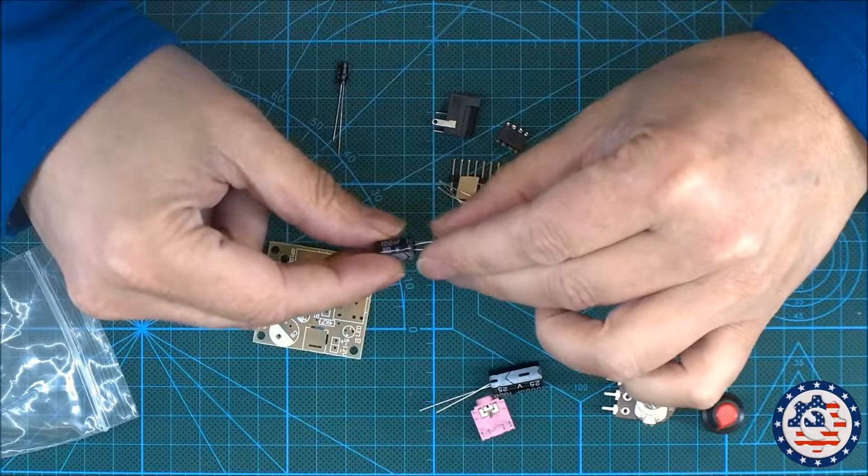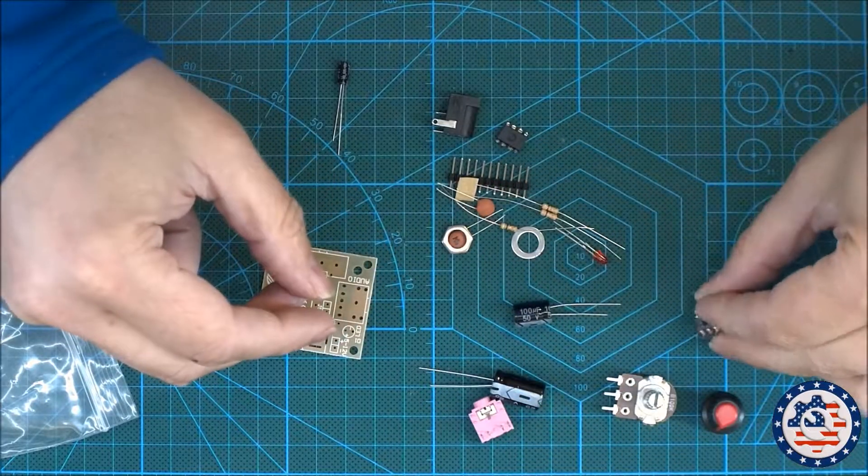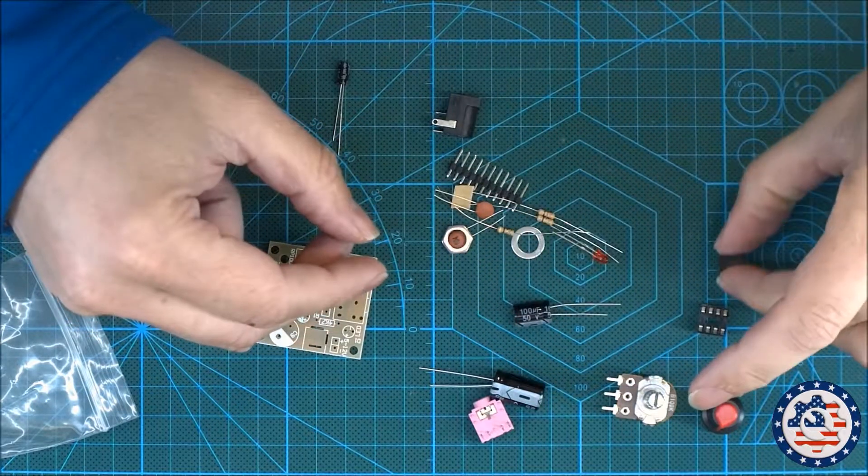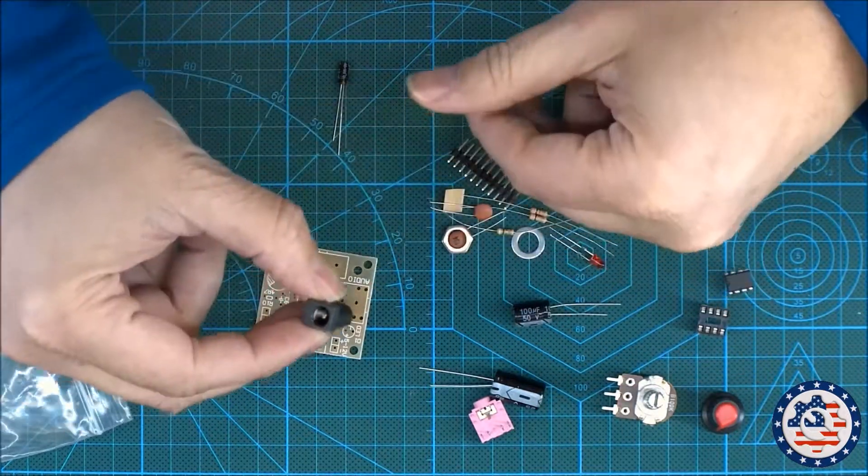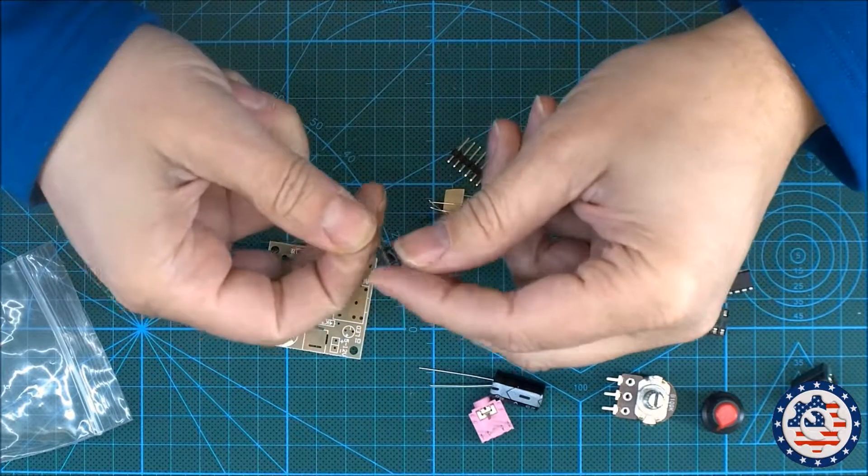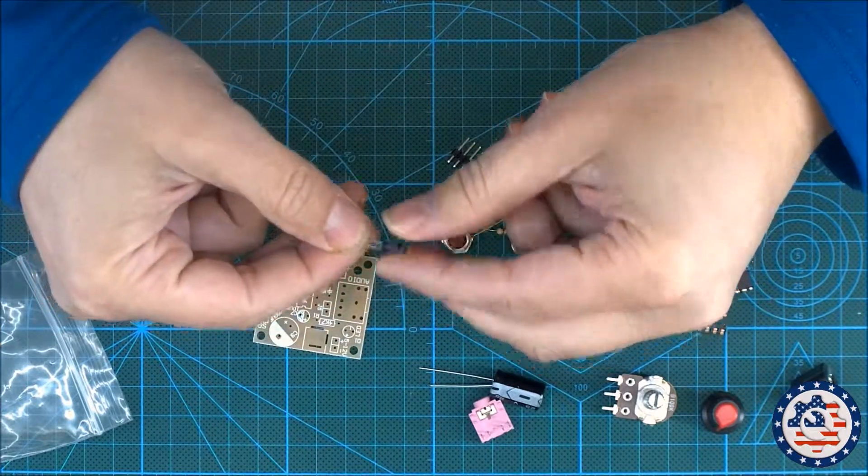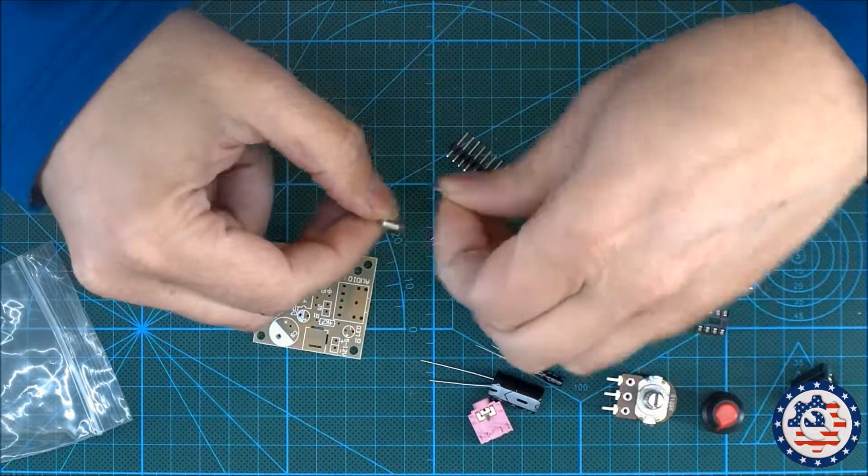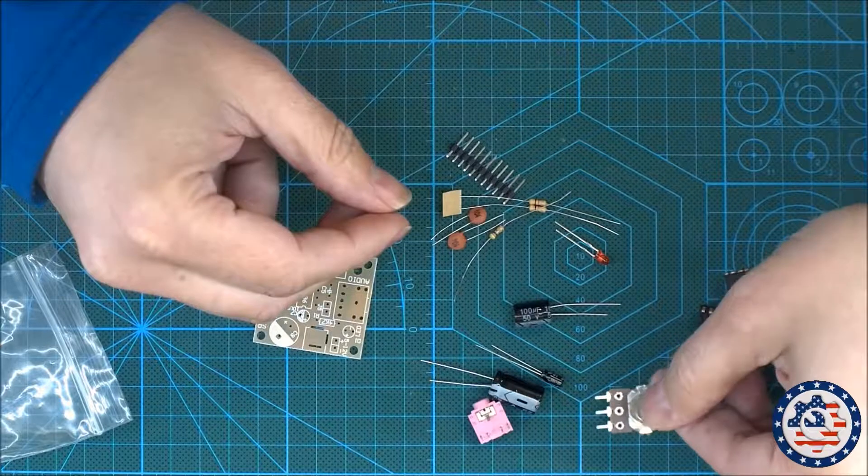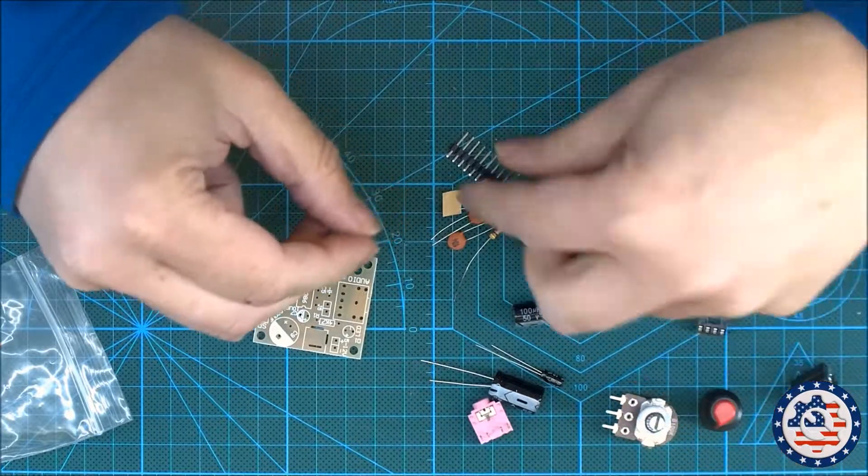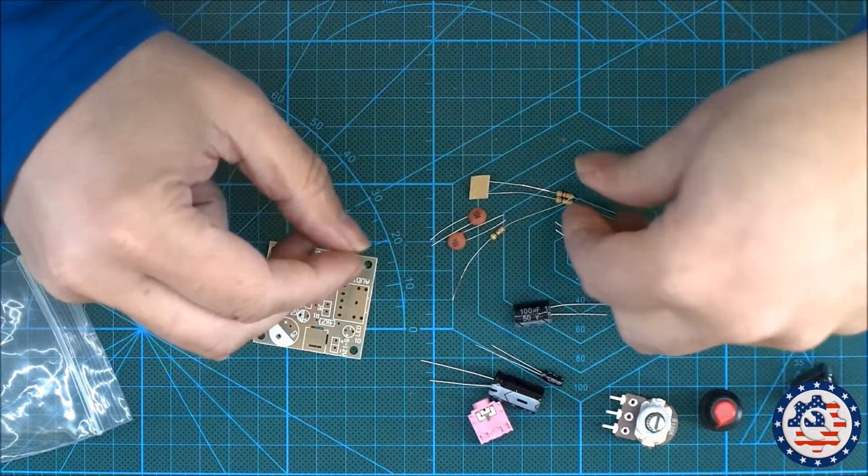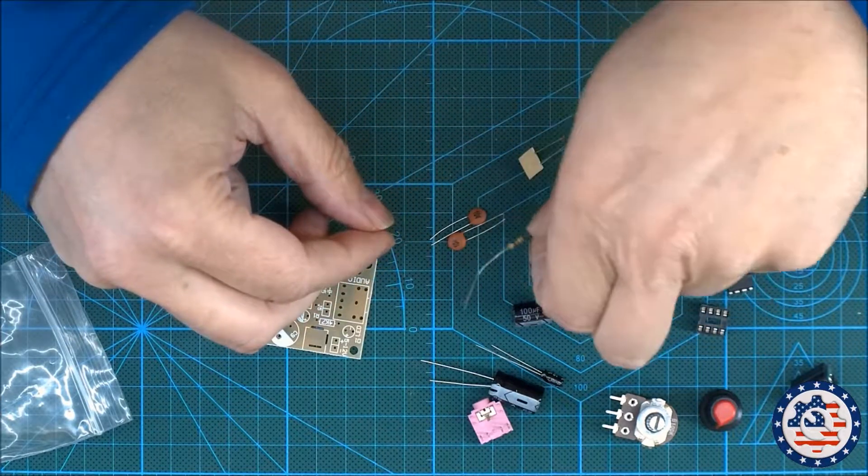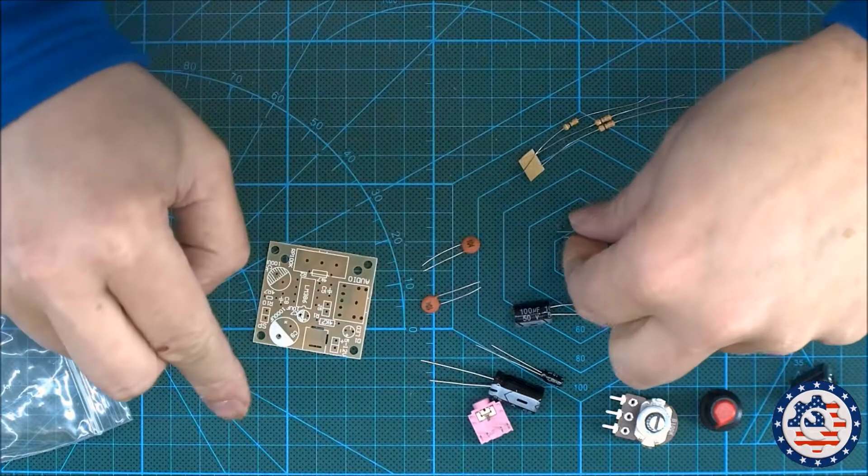100µF 50 volts, chip socket holder and the LM386 itself, a power jack, another capacitor. This is a 10µF 25 volts. These are for the pot. A set of header pins, some resistors, another resistor, some ceramic capacitors and an LED.